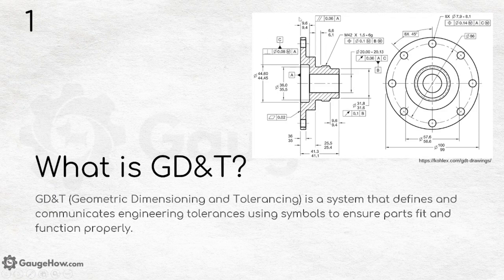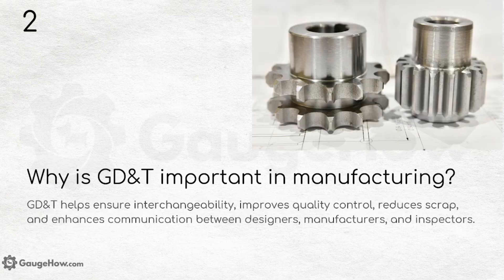If you take a close look at this figure, there are various symbols present which define different kinds of GD&T. GD&T is important in manufacturing because it helps ensure interchangeability, improves quality control, reduces scrap, and enhances communication between designers, manufacturers, and inspectors — basically increasing precision while manufacturing.